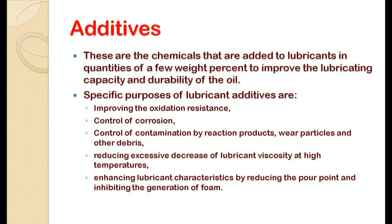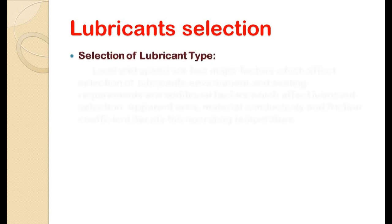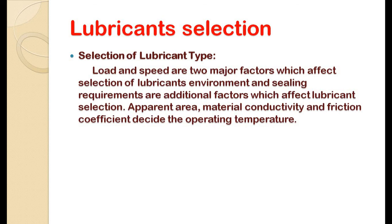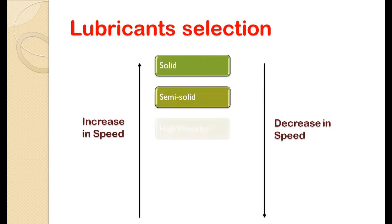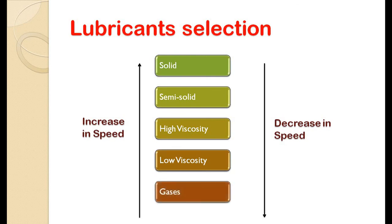The last topic is how lubricant is selected for a specific application. Lubricant selection mainly depends upon the speed of the moving surfaces and the load the lubricant is going to carry. There are many other factors such as material of the surfaces in contact and operating temperature. Here, speed is considered as the primary parameter for selecting the correct lubricant for a specific application.